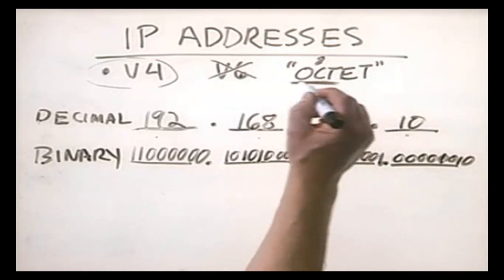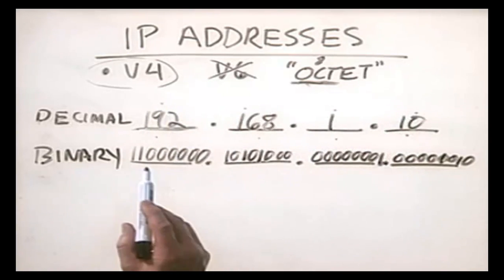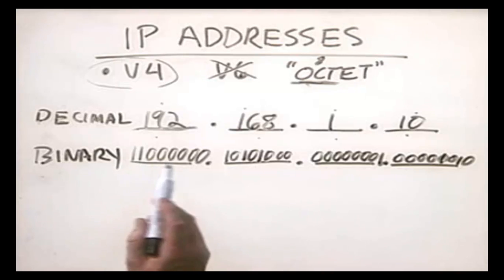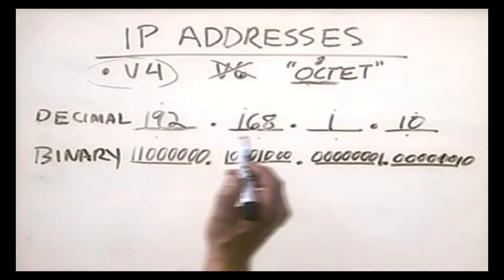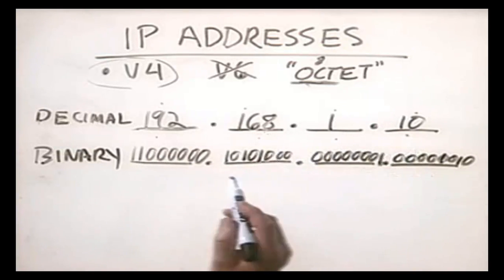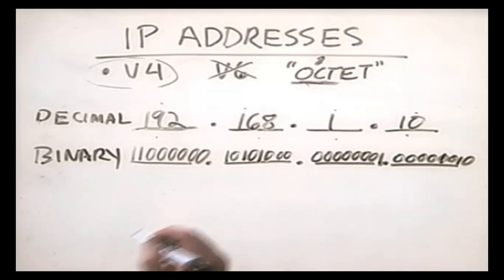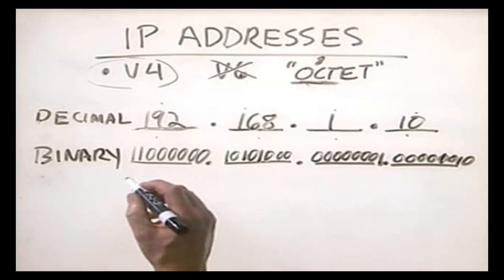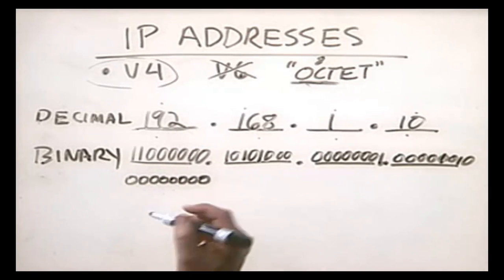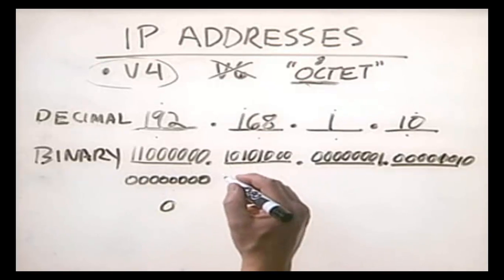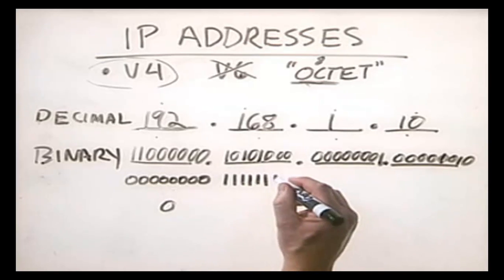You see where the octet comes into play? We call each of these octets because they're actually composed of an 8-bit binary number, hence the term octet. Because each of these is actually an 8-bit binary number, there is a minimum and a maximum value that can appear in each octet. In binary terms, the minimum value you can have is 8 zeros, which in decimal is 0. For a maximum, the highest you can have is 8 ones.